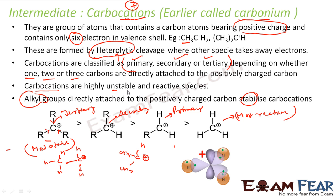Carbocations are generally very unstable. As I mentioned, they occur only for a fraction of a second and are very, very unstable and reactive. But within carbocations, the primary is the most reactive and the tertiary is least reactive.